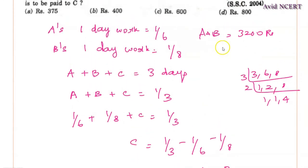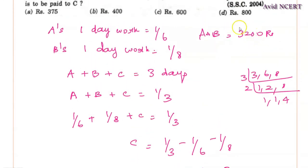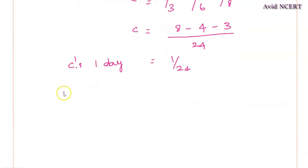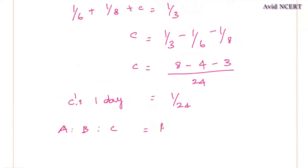Now, this amount, 3,200 has to be shared with the A, B and C. So they have to be in the ratio, which is A's 1 day work is to B's 1 day work is to C's 1 day work, which is equals, we know A's 1 day work is 1/6 is to B's 1 day work will be equals to 1/8 is to C's 1 day work is 1/24.